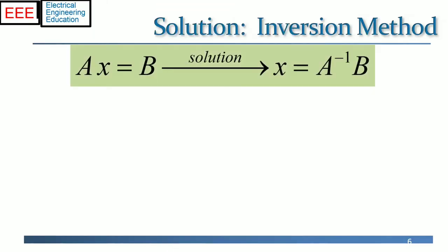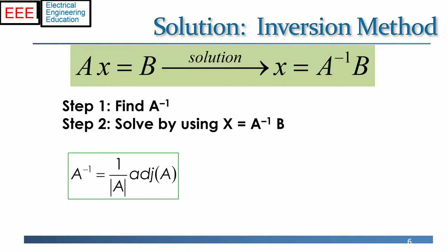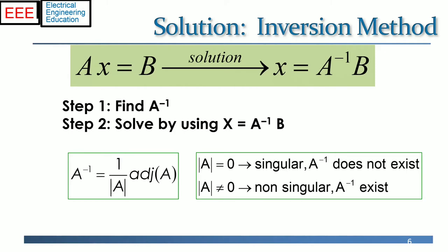The solution of the system represented by Ax = b — that is, to find the unknown variables or the column vector x — is by taking the inverse of coefficient matrix A and then multiplying with the output column vector b. Remember that the solution only exists if the determinant of the coefficient matrix is non-zero; in such a case A is said to be non-singular, otherwise singular. If the determinant is zero, the solution doesn't exist. However, if such a situation arises in practical problems, the pseudo-inverse can be used.